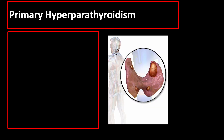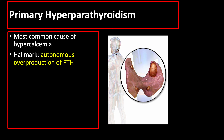Primary hyperparathyroidism is the most common cause of hypercalcemia. The hallmark of primary hyperparathyroidism is autonomous overproduction of parathyroid hormone. It may be due to adenoma of the parathyroid gland, hyperplasia of the parathyroid gland, or parathyroid cancer.